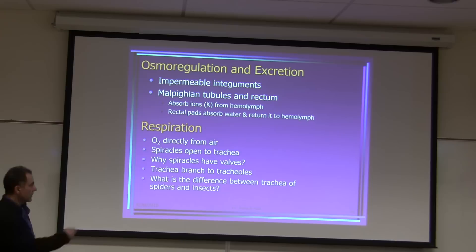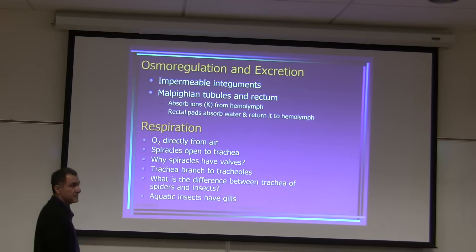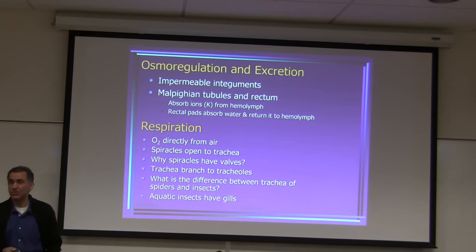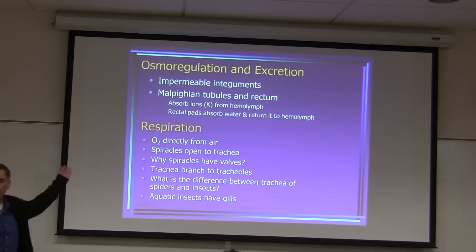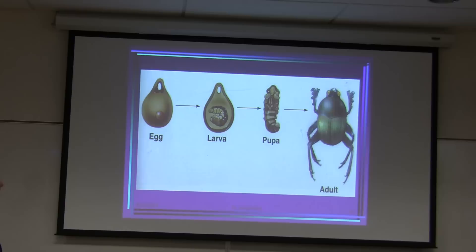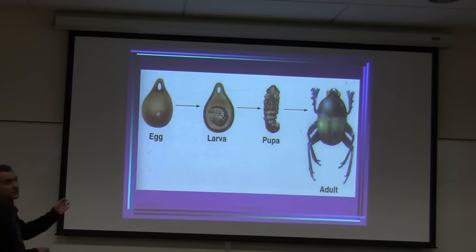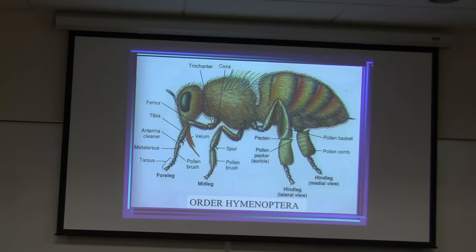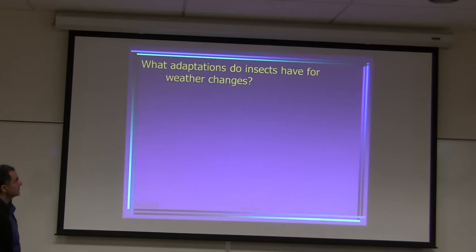Some aquatic insects have gills and can be found in ponds and lakes. Here is an example of beetle metamorphosis — holometabolous: egg, larva, pupa. The internal structures shown here are too detailed to worry about for your exam.